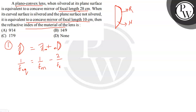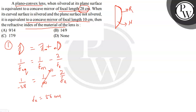The equivalent focal length of the mirror is 28 cm, so using sign convention: 1/(−28) = 1/f_mirror − 2/f_L. The focal length of the plane mirror is infinity, so 1/infinity = 0. Therefore: −1/28 = −2/f_L, giving f_L = 56 cm.